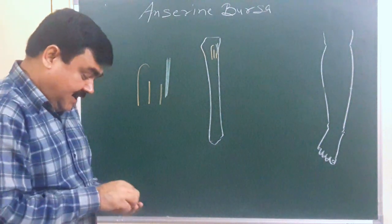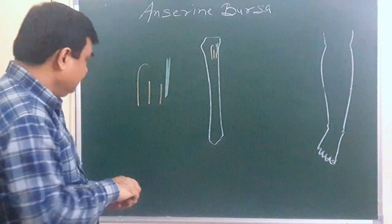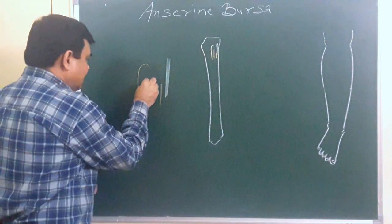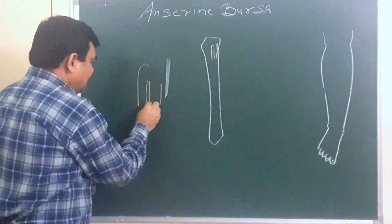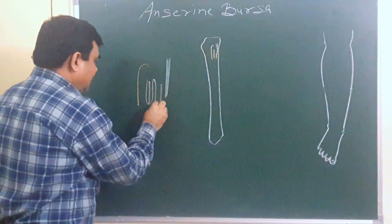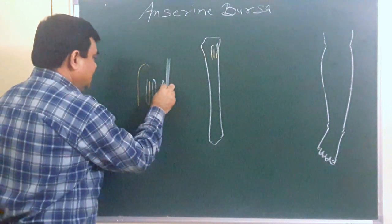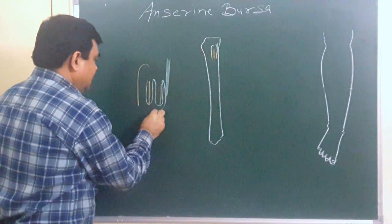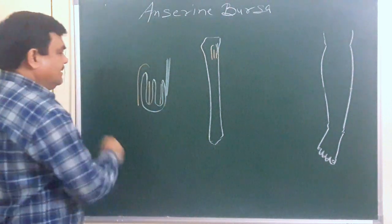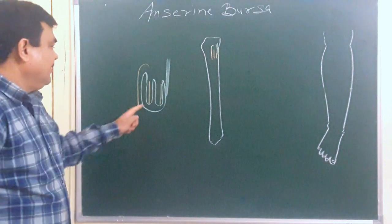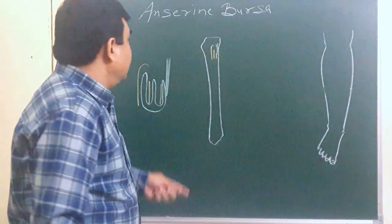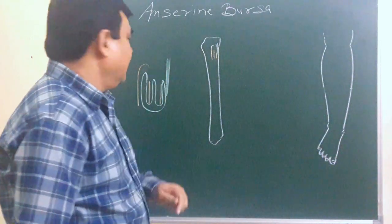This is a complicated bursa, present here in relation to these structures. This bursa is known as the Anserine Bursa.